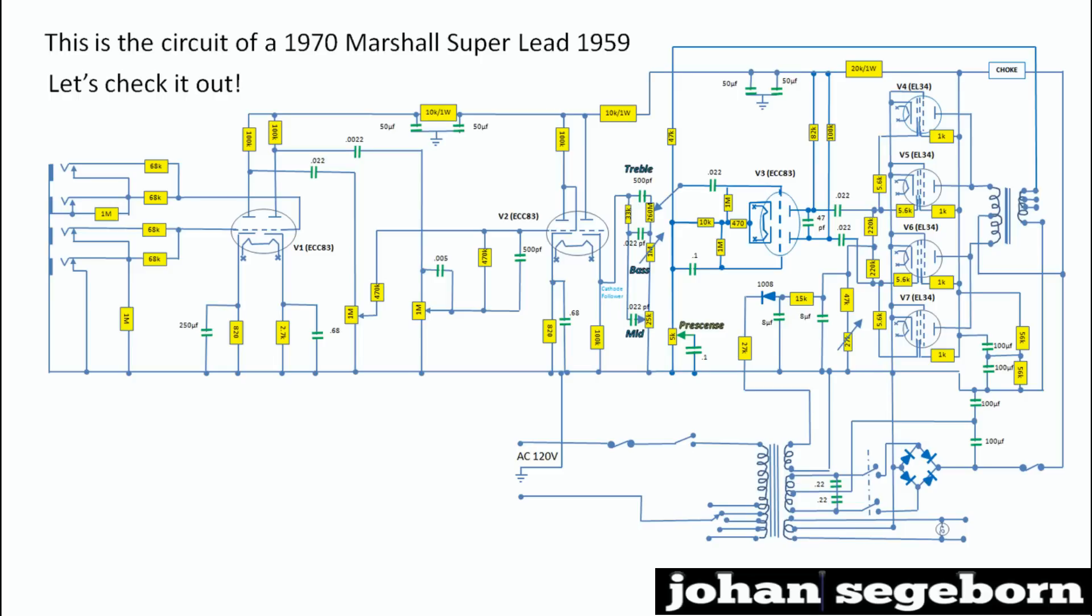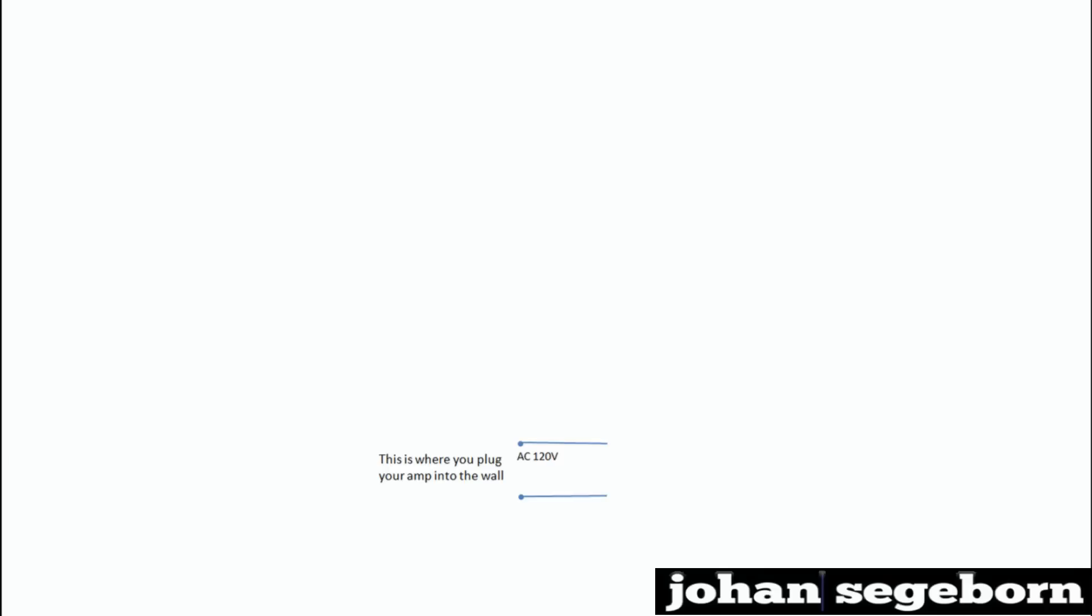Hi. Well, let's check out the circuit of this Marshall Superlead. Let's start off. When you plug it into the wall, you've got AC 120 volts. This is transformed in a power transformer to a higher voltage level, which we need to power the tubes.